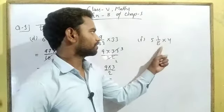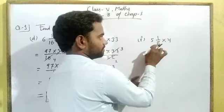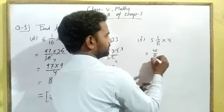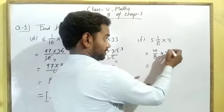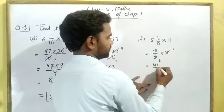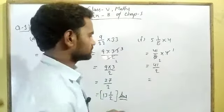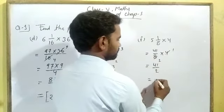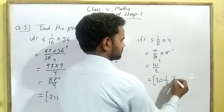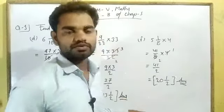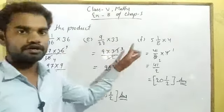Part F: 5 whole 1 upon 8 multiplied by 4. This is a mixed fraction — convert to improper: 8 × 5 is 40, plus 1 is 41 upon 8, multiplied by 4 upon 1. 4 and 8 can be cancelled: 4 × 2 is 8, 4 × 1 is 4. This gives 41 upon 2. Converting the improper fraction to mixed: 41 divided by 2 gives quotient 20, remainder 1. So the answer is 20 whole 1 upon 2. Remaining 3 parts you will solve by yourself.